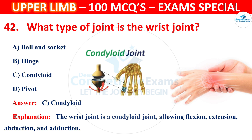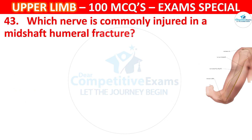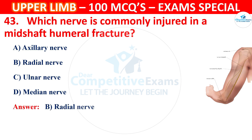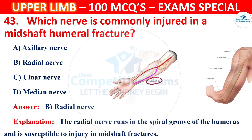Question number 43: Which nerve is commonly injured in a mid-shaft humeral fracture? The correct answer is B, radial nerve. The radial nerve runs in the spiral groove of the humerus and is susceptible to injury in mid-shaft fractures.